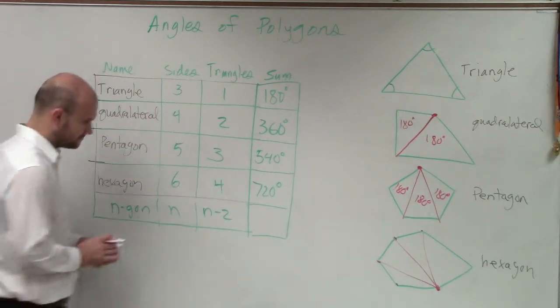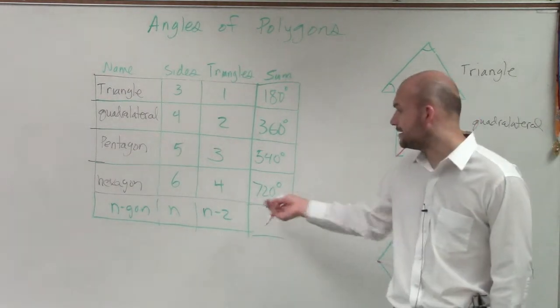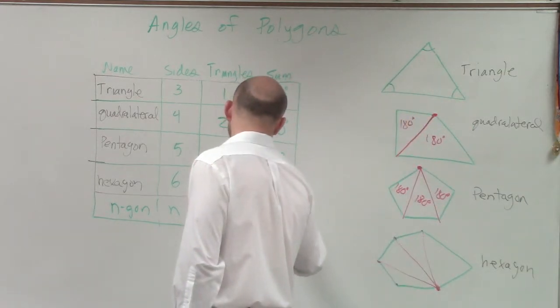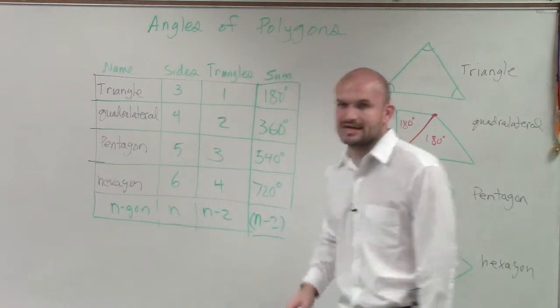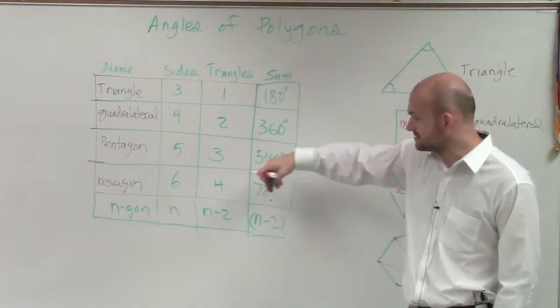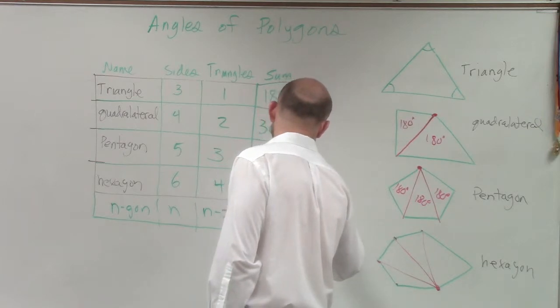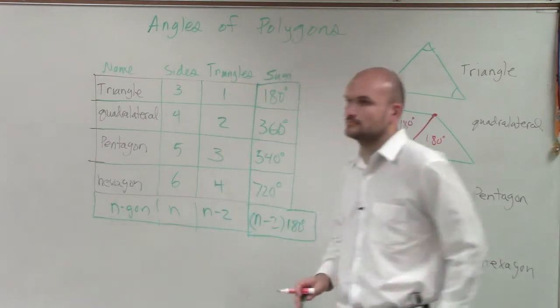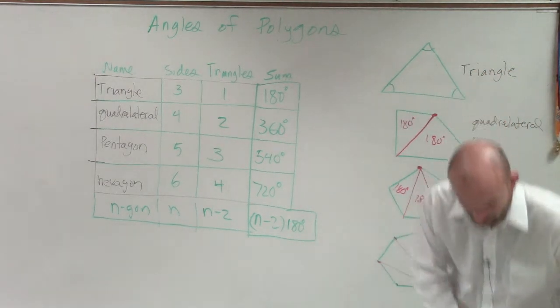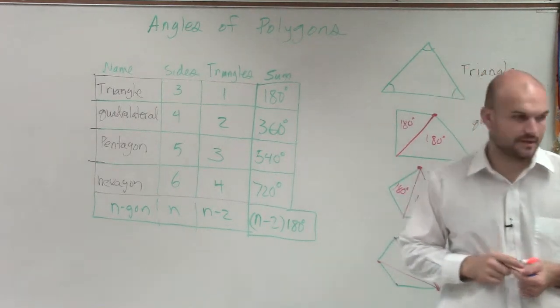For the final thing, I want to give you guys a rule. For n minus two, all you're going to do is, if I say, tell me what is the measure of all the angles in a polygon, and I don't tell you how many sides, then you're just going to say it's the number of sides minus two times 180 degrees. OK? Everyone understand? OK. So let's do some practice.